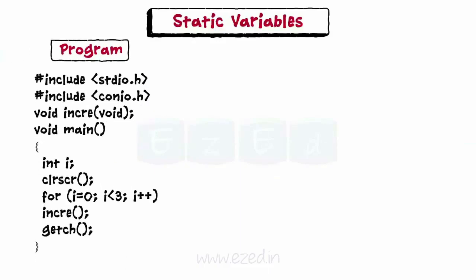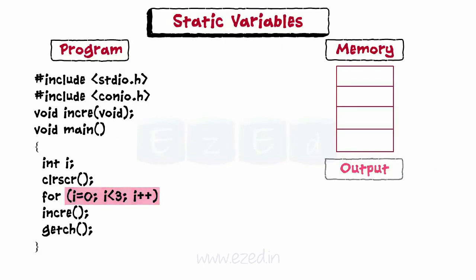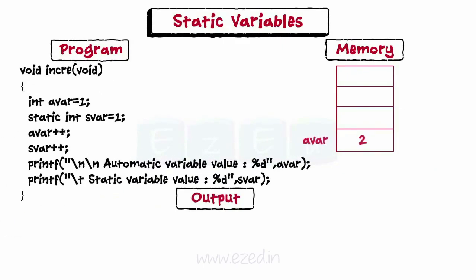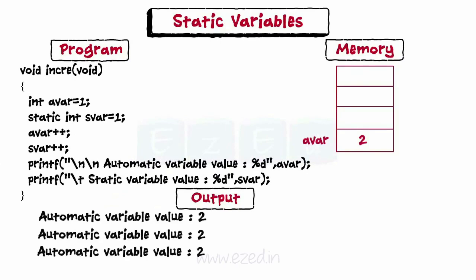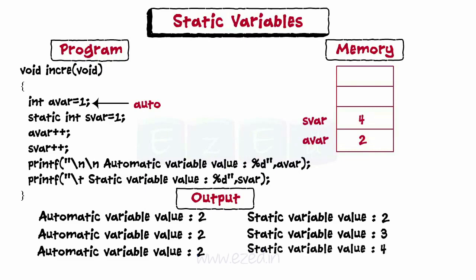Write a program to demonstrate the use of static storage class. The function increment is called three times within a loop. When the function is called every time, the auto variable is assigned value 1 as its storage class is automatic. But the static variable is assigned 1 only when the function is called for the first time. For the second call, the auto variable remains the same while the static variable is incremented, as its value remains static. Similarly for the third time.